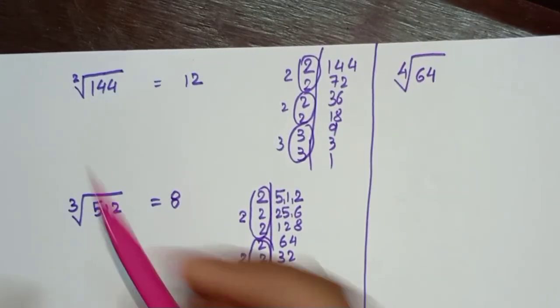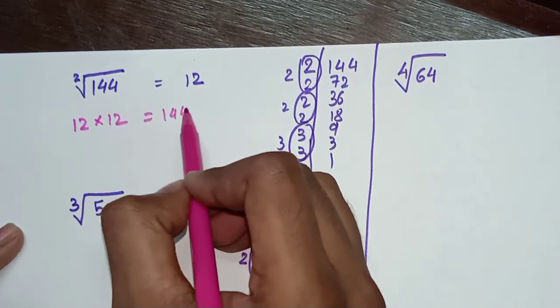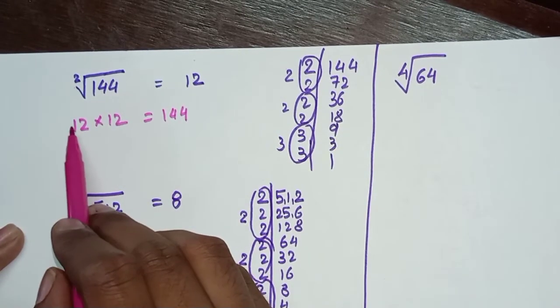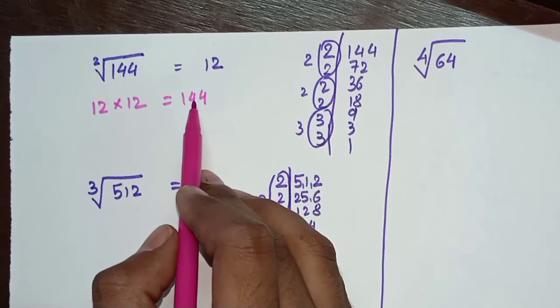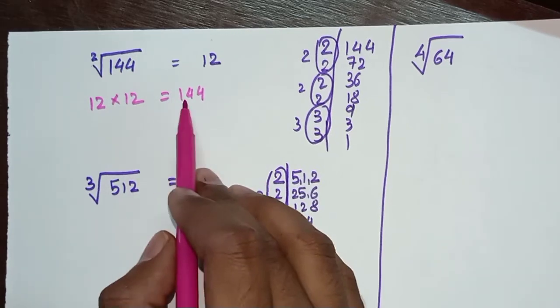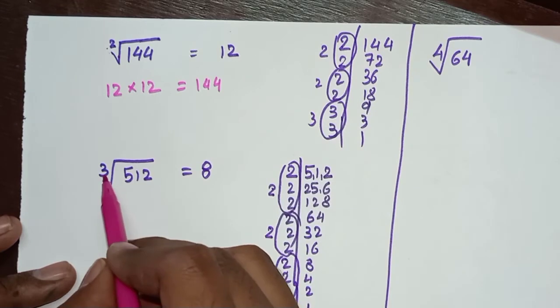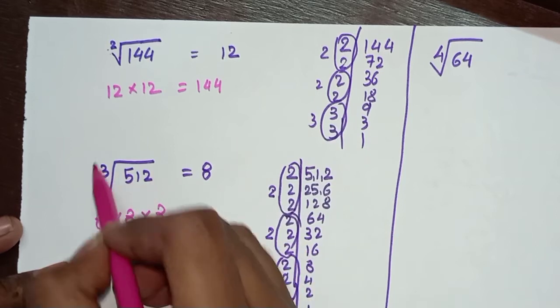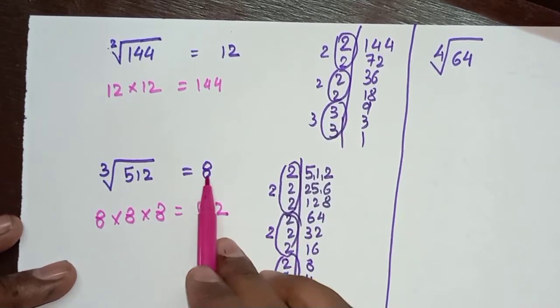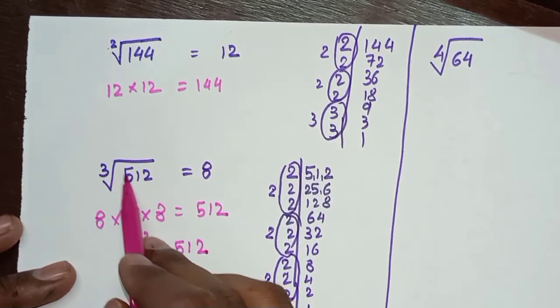The basic meaning of square root: when you multiply 12 with 12 you get 144. Square of a number means when you multiply a number with itself two times. If 144 is the square of 12, its square root is 12. For cube root of 512 is 8, meaning when you multiply 8 with itself three times you get 512. So the cube of 8 is 512, and cube root of 512 is 8.